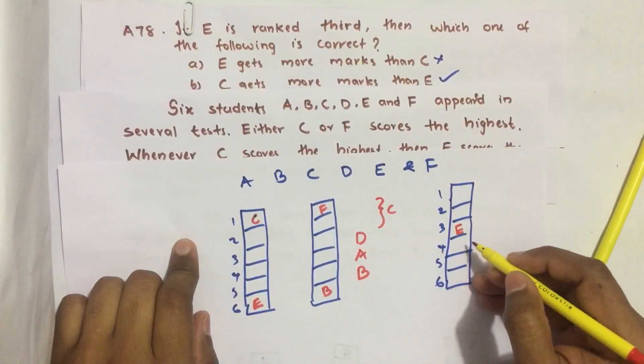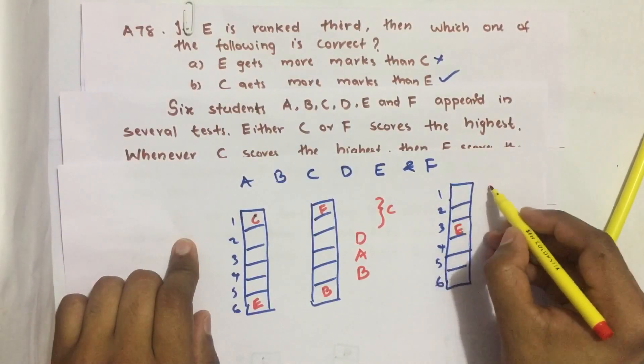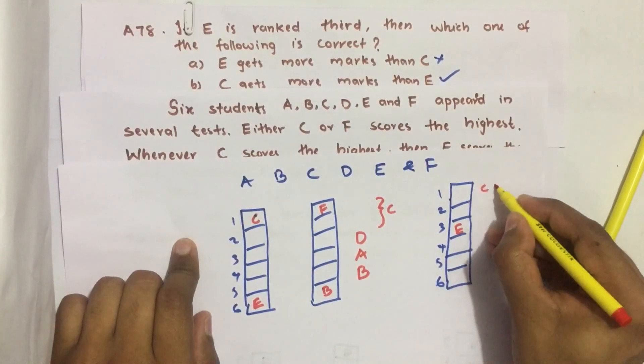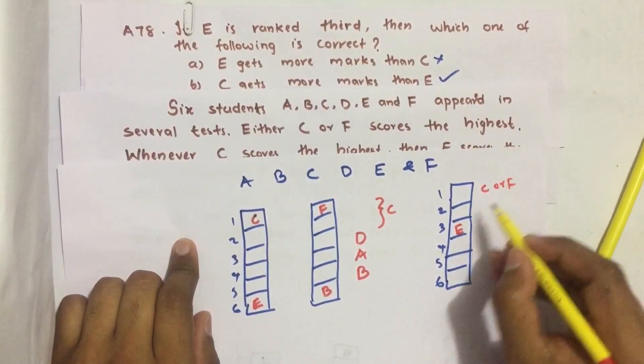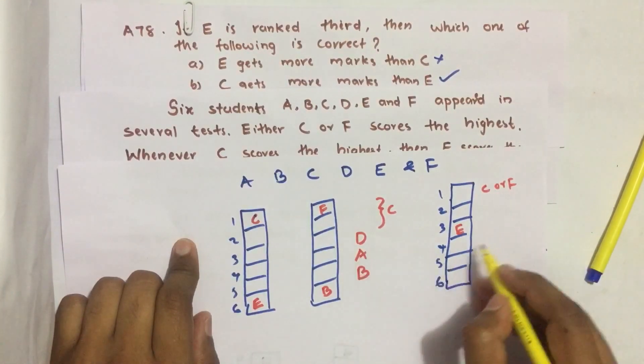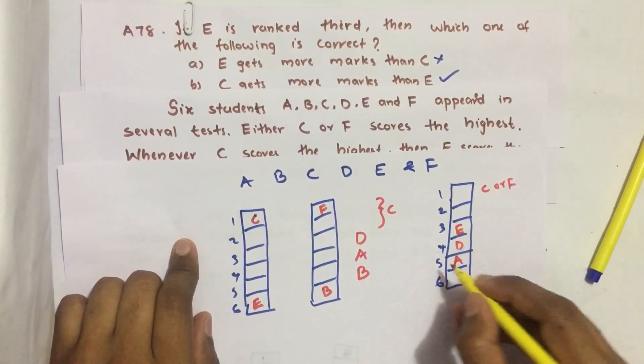Which is possible only if C or F should be at the top. So here it is C or F. Then the possible combination - B, D just above A - is only here.